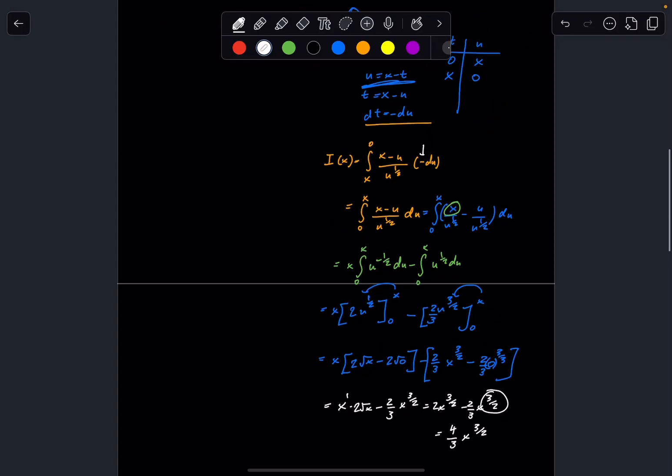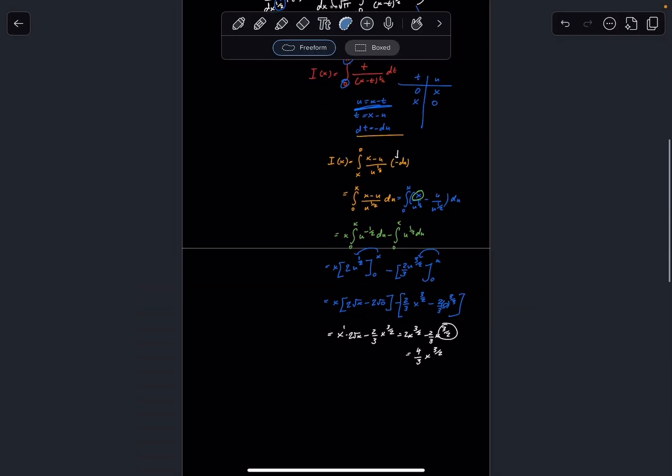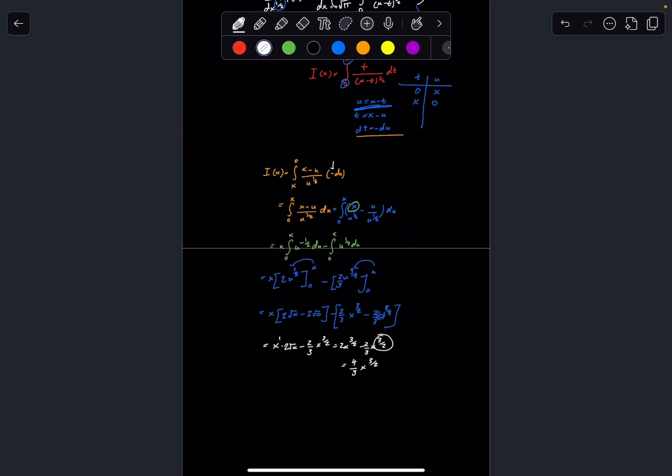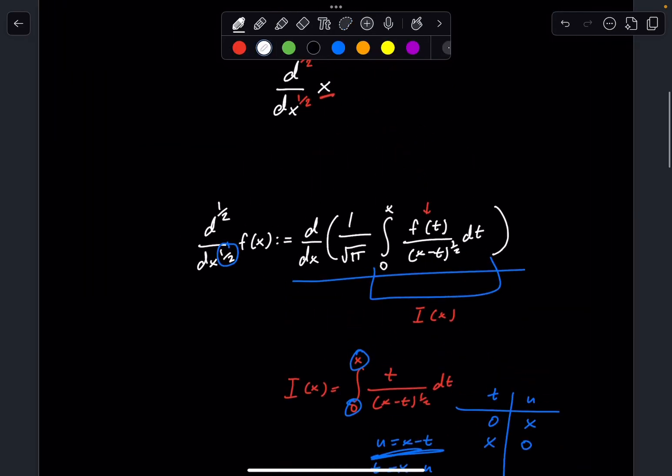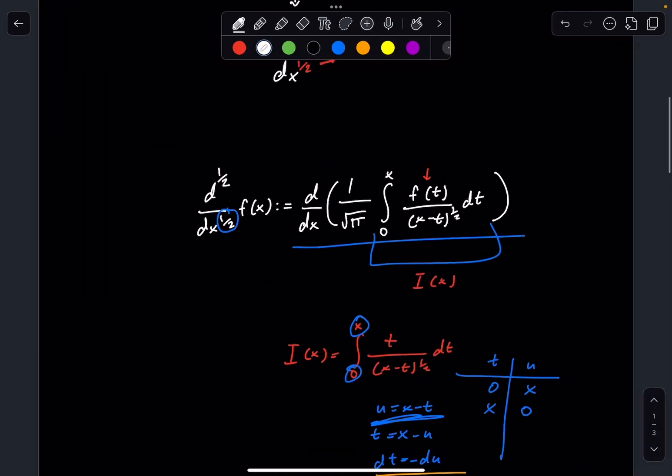Now, if you look at our original problem statement, where we began our integral, we said we're going to be taking, this 1 over √π doesn't matter, we can pull that out, because it's in the derivative. But we defined this to be our I(x), and we're taking the derivative of our I(x). So now that we computed our I(x), let's take the derivative.